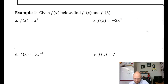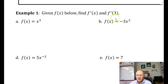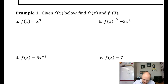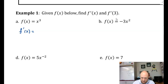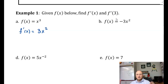Example number one — given f of x, find f prime of x and then find f prime of 3. If f of x is equal to x cubed, I'm going to use the power rule: multiply by the power — 3 times x — and decrease the power by 1. 3 minus 1 is 2. So f prime of x equals 3x squared. That's the derivative.